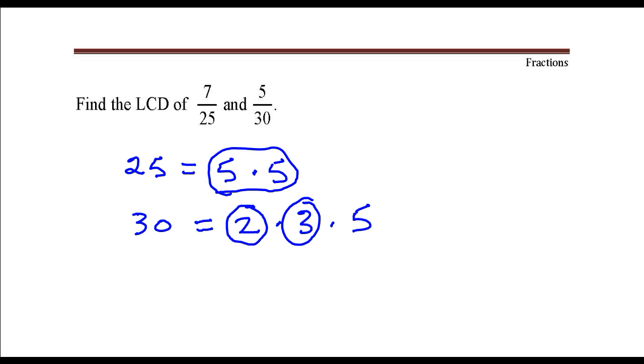Okay, we can write the least common denominator now. Least common denominator is the product of those numbers that I have circled. So this is 2 times 3 times 5 times 5.